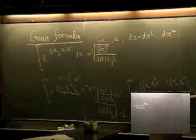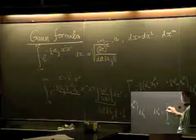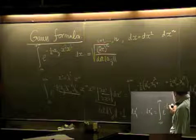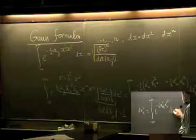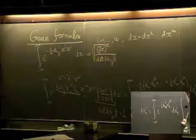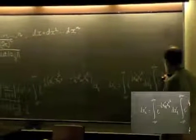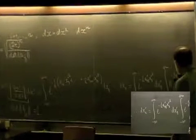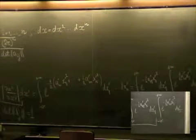The integral splits into the product of integrals: integral from −∞ to +∞ of exp(−½ a'_11 x'^1²) dx'_1, times integral of exp(−½ a'_22 x'^2²) dx'_2, and so on. The computation reduces to computing each one-dimensional integral.